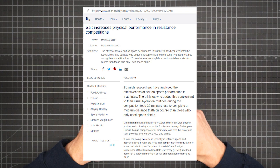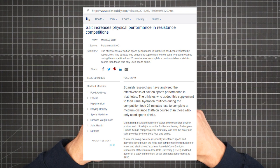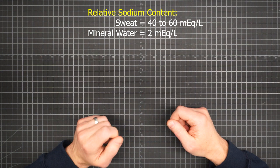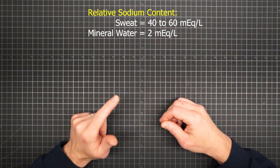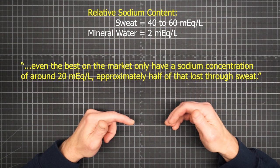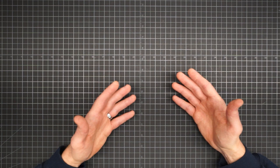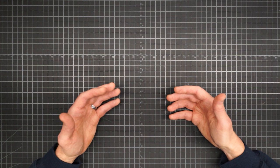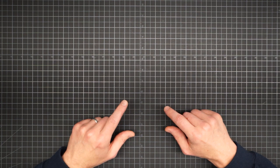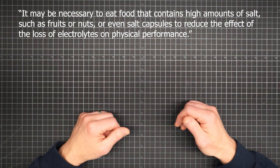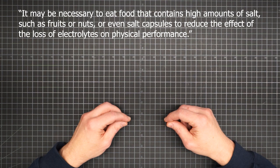From the researchers who conducted the study on salt and performance during triathlete competition, sweat is from 40 to 60 milliequivalents per liter of sodium. Mineral water is about two. And while sports drinks are specifically designed to replace both fluid and electrolytes, even the best on the market only have a sodium concentration of around 20 milliequivalents per liter, approximately half of that loss through sweat. They go on to say that sports drink companies know that more sodium would be beneficial, but it becomes an issue of taste and marketability. In other words, the drinks would have to be too salty in order to be properly effective. No one would want to drink them and they wouldn't sell. The authors state, for typical sports lasting less than two hours, such sports drinks may be adequate. But for extremely long events, like hiking all day, it may be necessary to eat food that contains high amounts of salt, such as fruits or nuts, or even salt capsules to reduce the effect of the loss of electrolytes on physical performance.